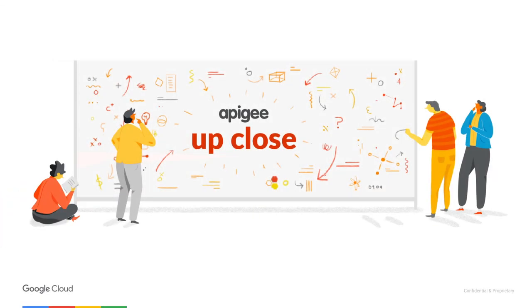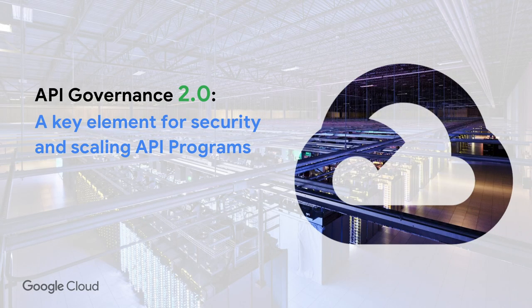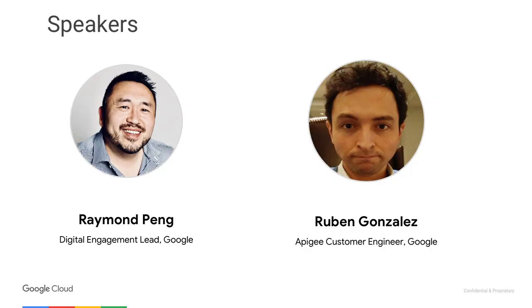Hello everyone, and welcome to today's webcast about API Governance 2.0, a key element for security and scaling API programs. My name is Raymond Peng, and I'm a digital engagement lead at Google, and I'm also joined with Ruben Gonzalez.